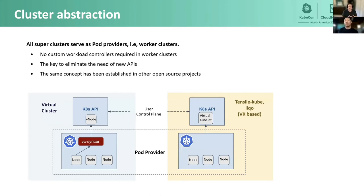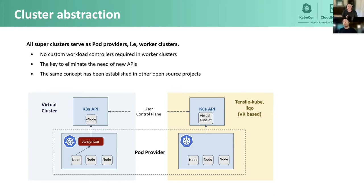On cluster abstraction: the core idea is taking a single cluster or multiple clusters and abstracting them into a single cluster experience, without introducing new workload controllers into those worker clusters. Looking at the lowest-level abstraction in Kubernetes — pods — and how to spread those across clusters. Tools like TencelCube and Liqo are already doing this using Virtual Kubelet as their abstraction, running a Virtual Kubelet that addresses one or many clusters for deploying workloads. Our work started with the Virtual Cluster toolchain, extending that same level of abstraction.